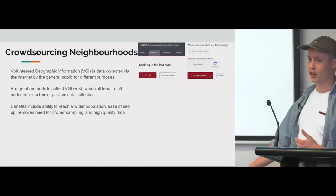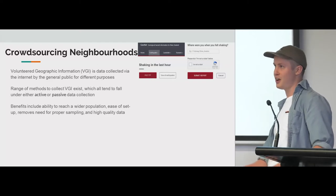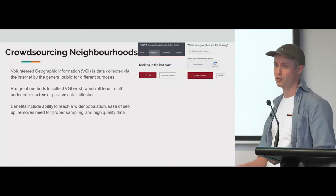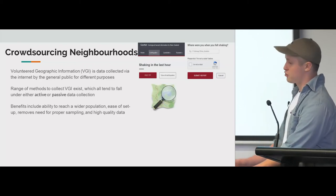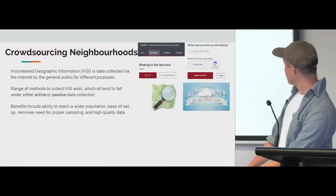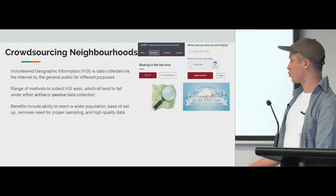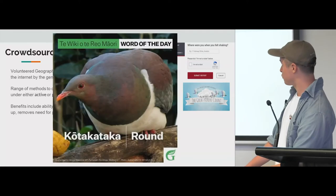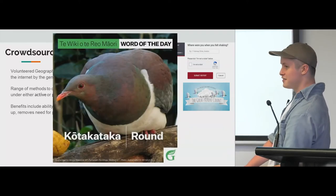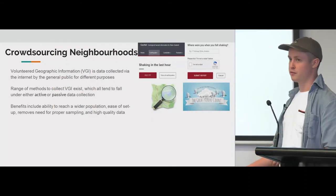One example, if you're from New Zealand, is the GeoNet Felt It report. Every time there's an earthquake, you hit up GeoNet and say if you felt the earthquake and at what intensity, and it plots it. There's also OpenStreetMap. There's also the Great Kereru Count, which is a survey run for a week in September asking people to cite Kereru — New Zealand's native wood pigeon. They're quite beloved and were Bird of the Year 2018. That's a great example of getting the community involved, thinking about their environment, and mapping solutions.